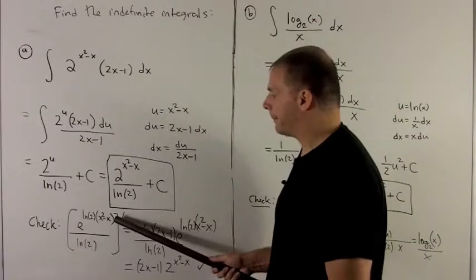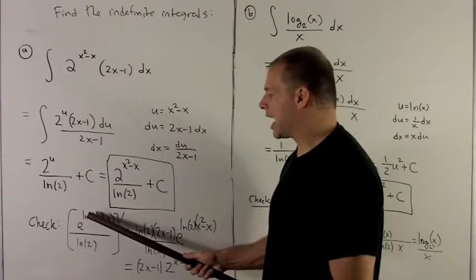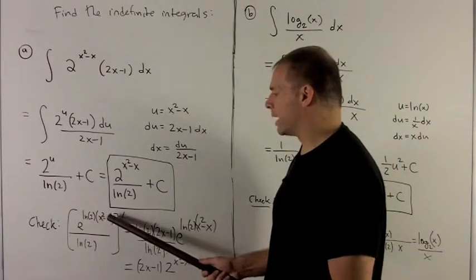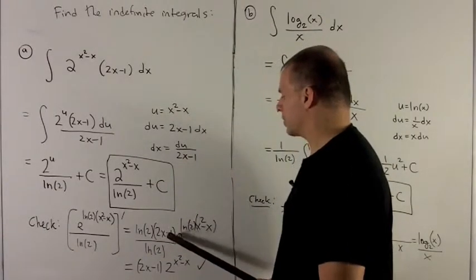And then I'm going to take the derivative at the top. Natural log of 2 is a constant, so I just put it down and then don't worry about it. Then derivative of x squared minus x is going to give me 2x minus 1.